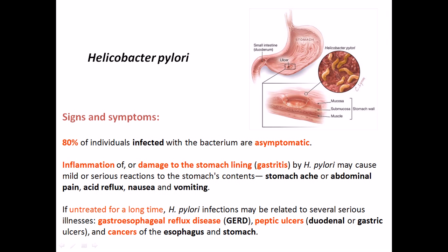If left untreated for a longer time period, Helicobacter pylori infections may cause severe complications like gastroesophageal reflux disease, or GERD. In this case, the gastric content of the stomach effluxes out through the esophageal wall. Since it is acidic, this acidic stomach juice can cause severe damage to the esophageal wall. It can also cause peptic ulcers.